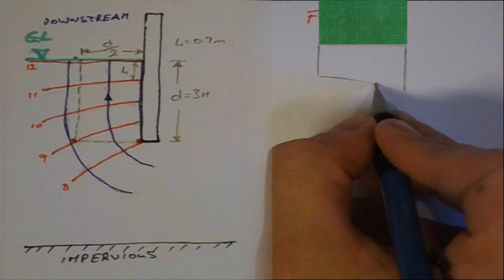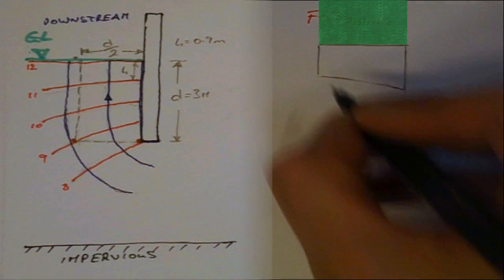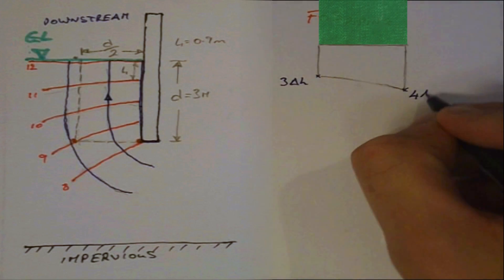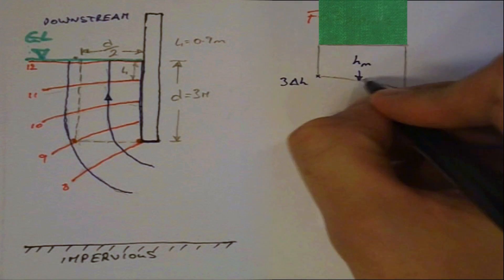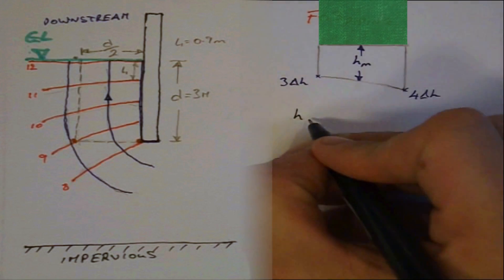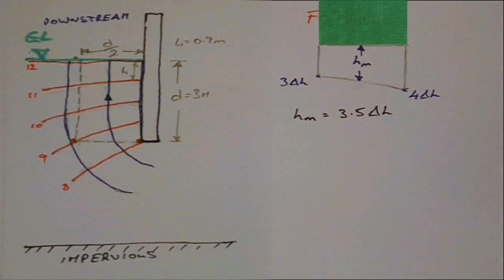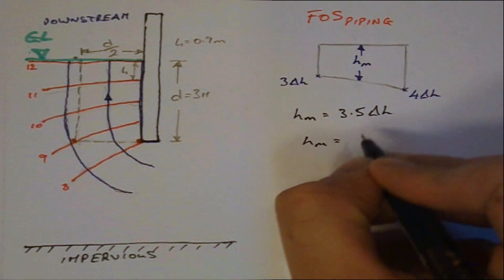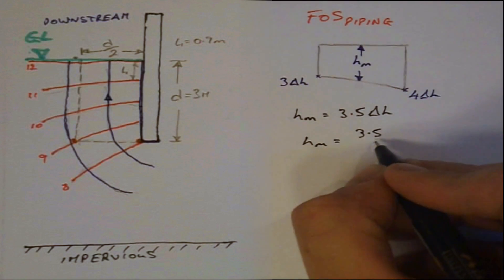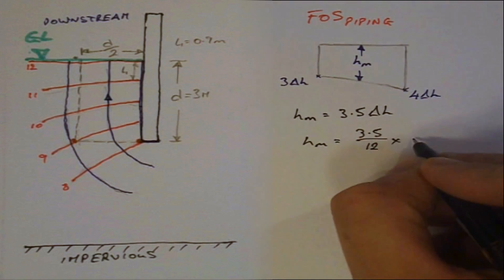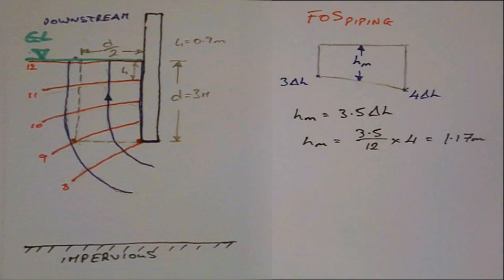This corresponds to 3 and 4 head drops respectively. So we can say the average or mean head along the base is equivalent to 3.5 head drops. For a difference in total head of 4 metres, the mean head can be calculated as 3.5 drops divided by a total of 12 equipotential drops multiplied by 4 metres.